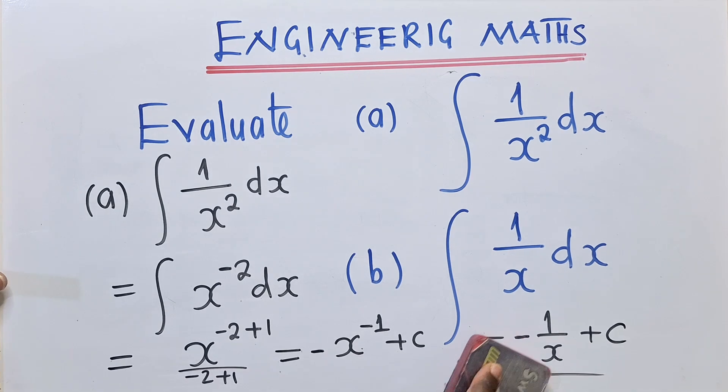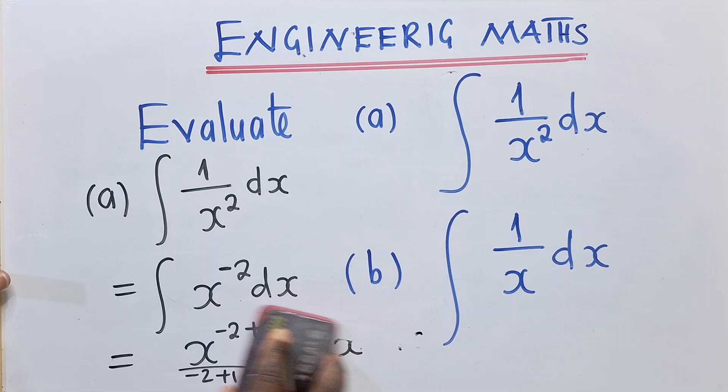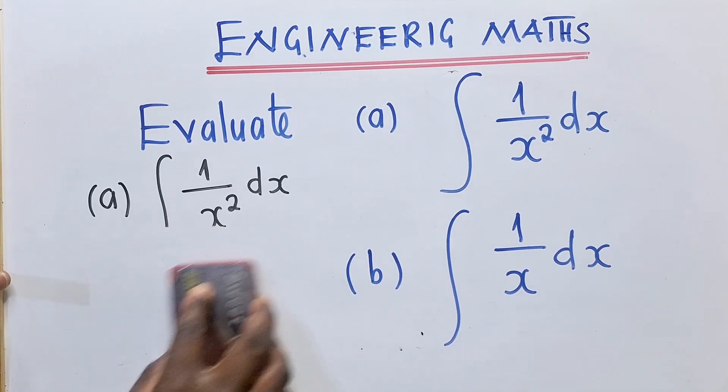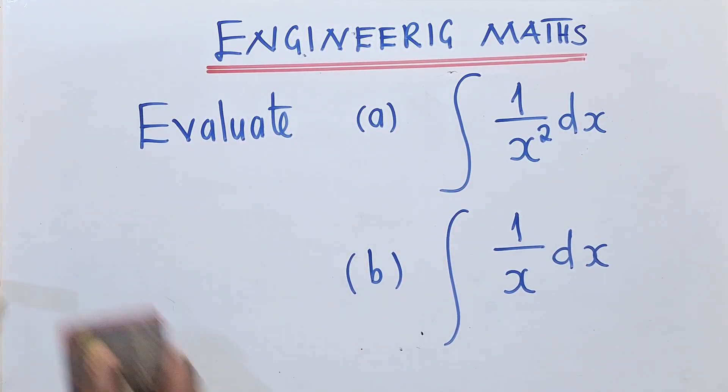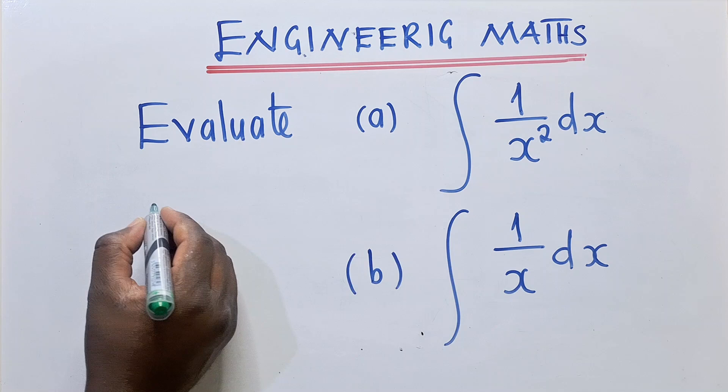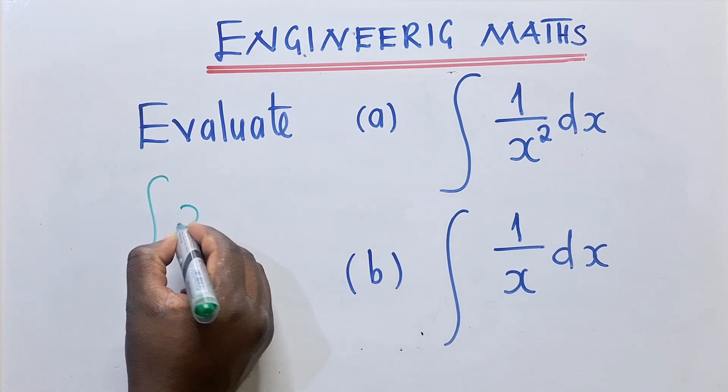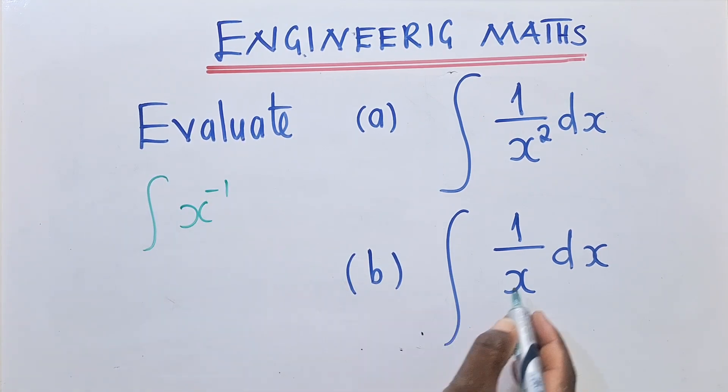So let's do question B and see what we're supposed to do on question B. For question B, here we just use the formula. The reason why we use the formula is that if we apply the laws of indices here, we say this becomes x power negative 1 right here.